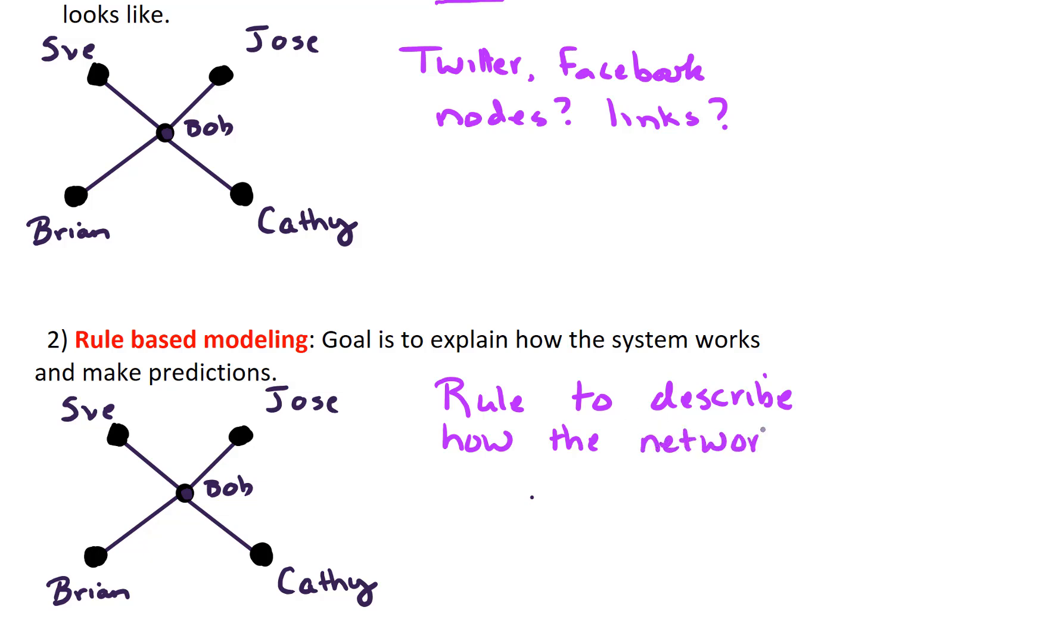And if we're interested in coming up with a rule for how the network grows, maybe the rule is add nodes to the most popular individual. So let's say there's a new person that joins this group. Maybe it's a company or a school. Maybe this person is Sarah. Who is Sarah going to become friends with? Well, if we come up with a rule, maybe our rule says, okay, new people will attach to the most popular node.